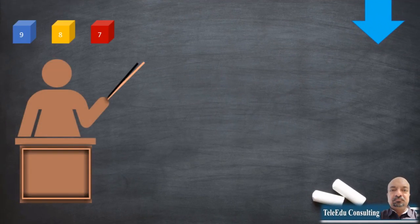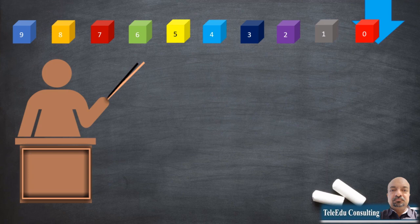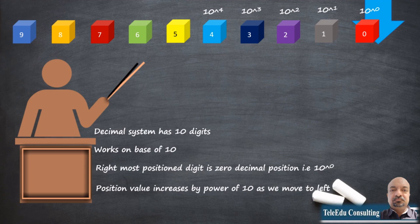Let us recap the decimal format that we all use. Since there are a total of 10 possible digits in decimal format — from 0 to 9 — it works on a base 10 system. We can also write them as powers of base 10 as per the position from the right side. The rightmost positioned digit is at decimal position 0, the second from the right is at position 1. Therefore, we can write these positions from right to left as base 10 to the power 0, base 10 to the power 1, base 10 to the power 2, and so on, increasing the value by 10 places as we move towards the left.